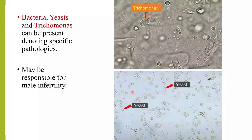Sometimes you will even see trichomonas, certain bacteria, yeasts, and fungi which will also appear as round cells. Here you can see a trichomonas which is looking like a round cell, and here you can see yeast cells which are round in appearance — so they may also be counted as round cells.